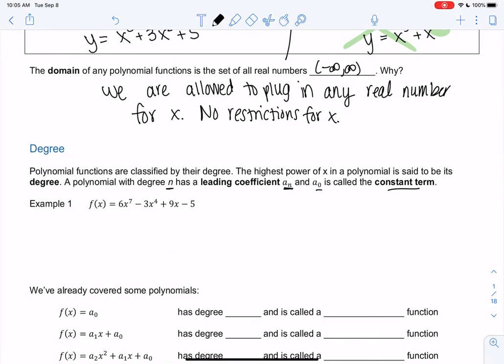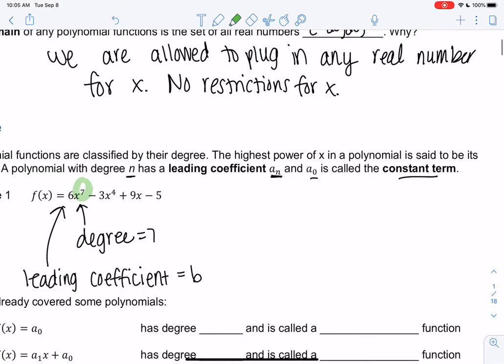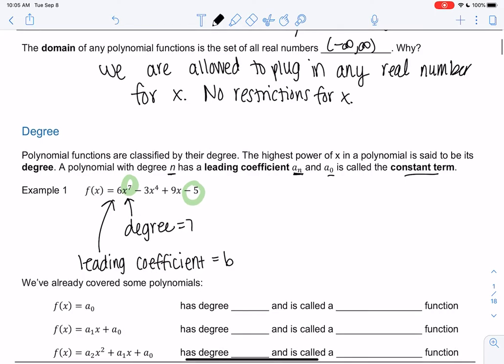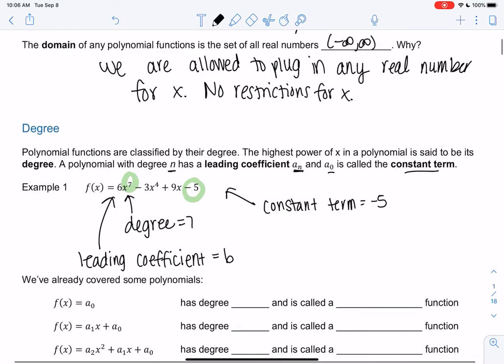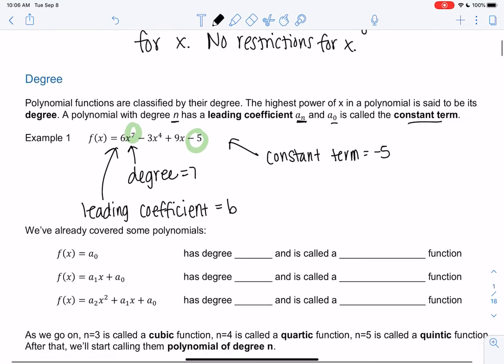In this example, we would have degree 7 because that's my highest power. We have 6x to the 7th, meaning 6 is my leading coefficient. Then we have minus 3x to the 4th, which is just kind of like a term, but x to the 7th has more power. Plus 9x is just another term. And then minus 5. Since 5 doesn't have an x value, that is our constant term. It'll be negative 5 because of the subtraction.